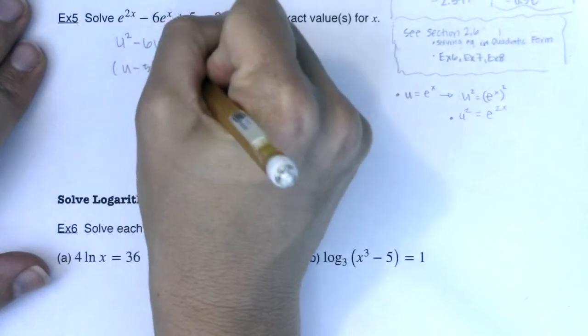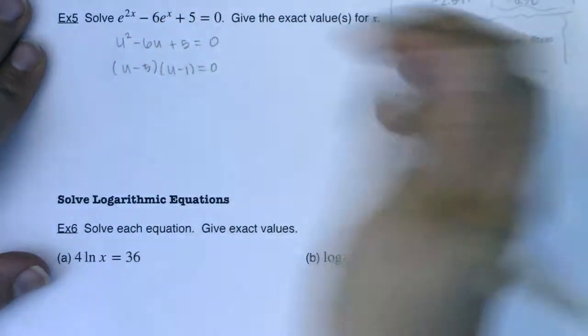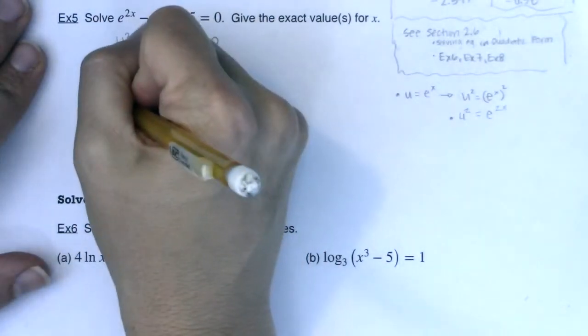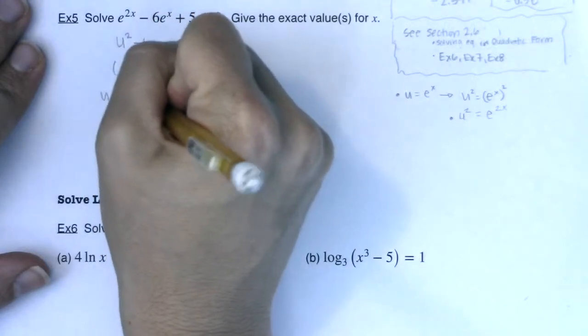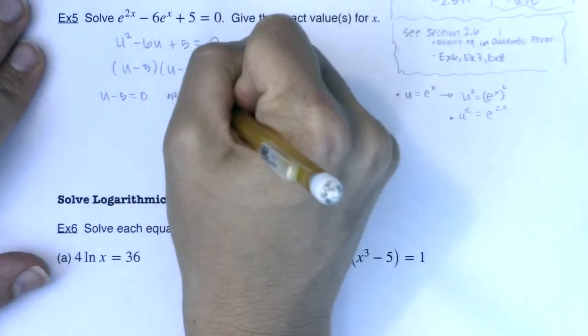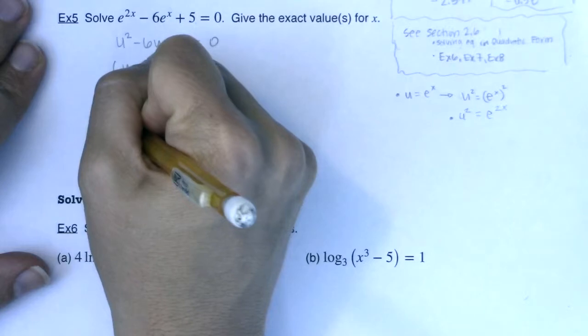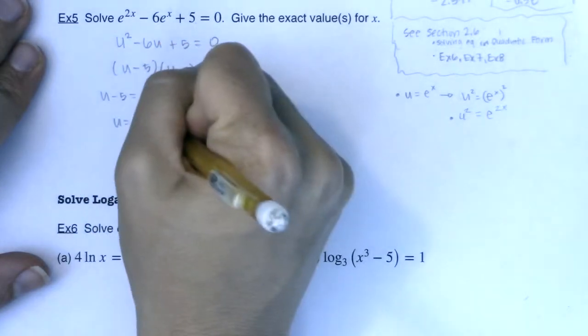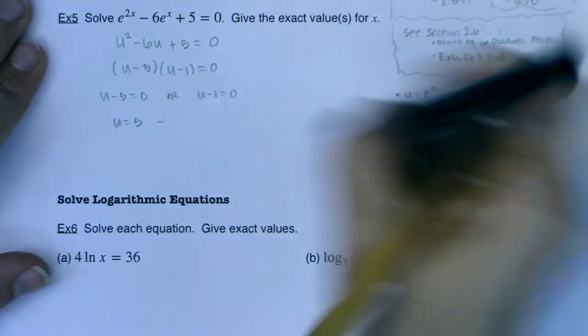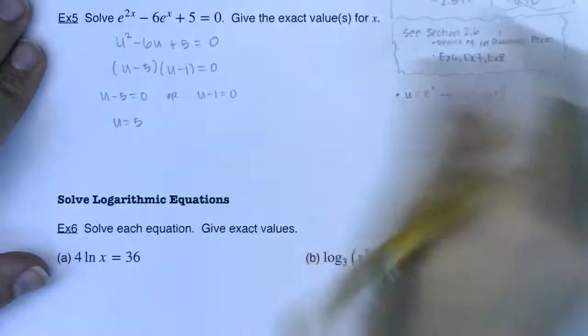But this one is nice in that I can factor it. This is u minus 5 times u minus 1 being equal to 0. And through the 0 product property, I see that either u minus 5 is equal to 0, or u minus 1 is equal to 0. So I get u is equal to 5, or u is equal to 1.